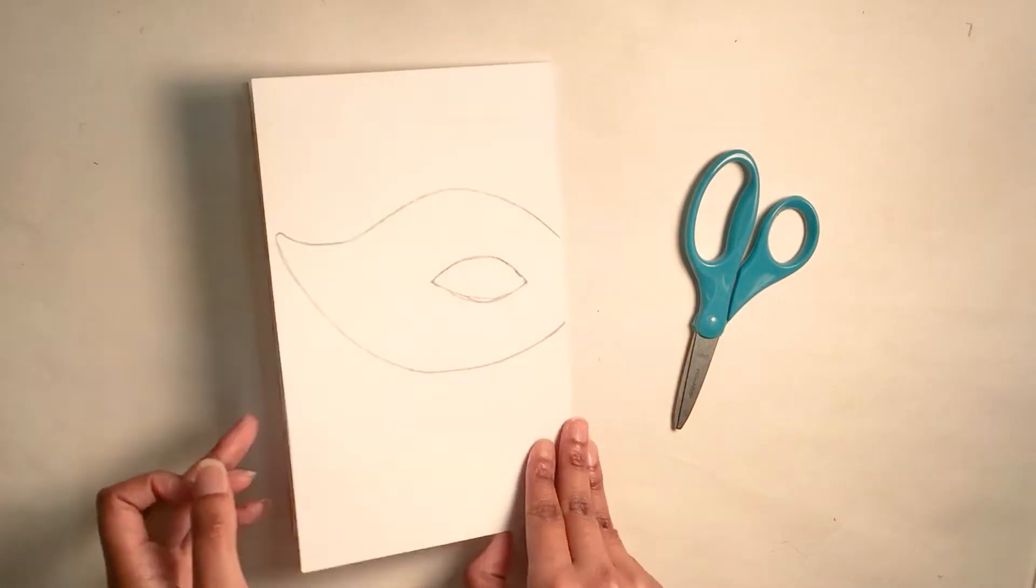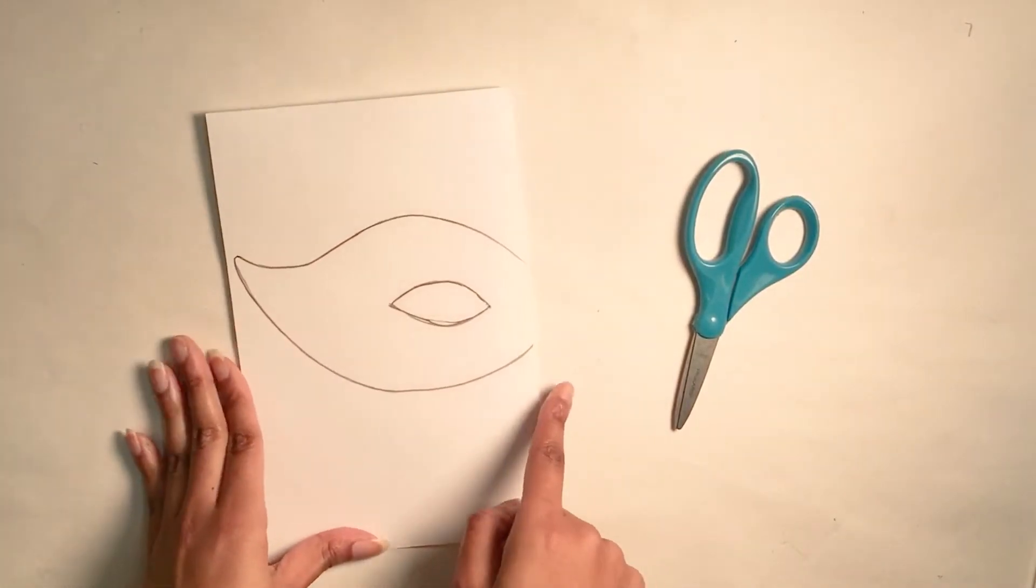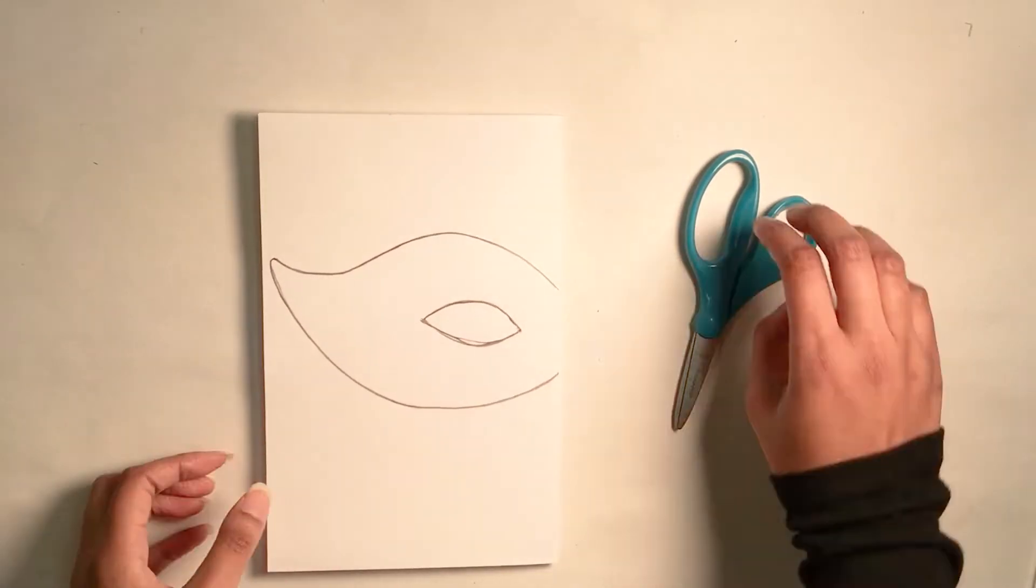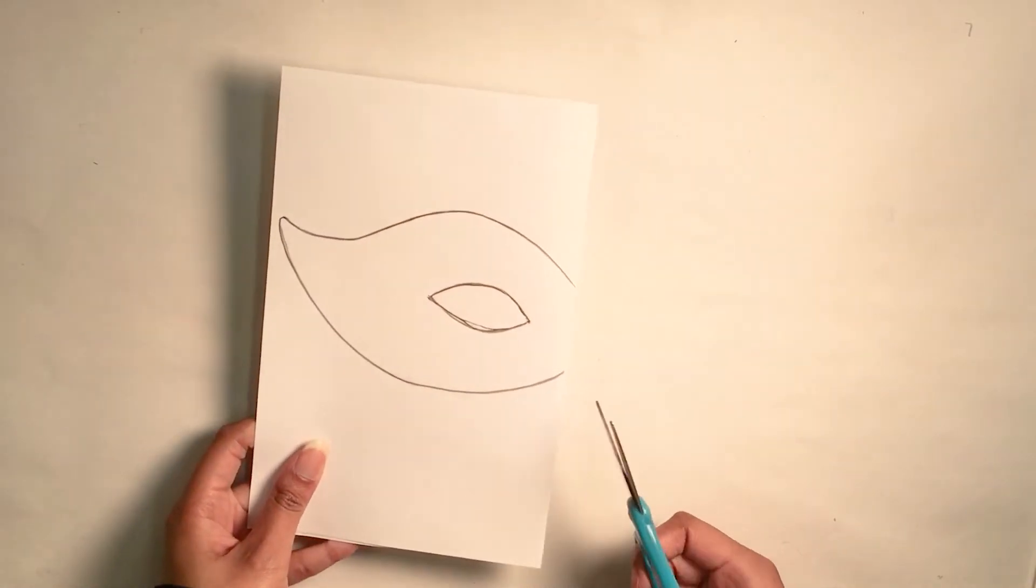Once you get your paper, fold it in half, draw half of your design and also the eye hole. Then while it's still folded, cut it out.